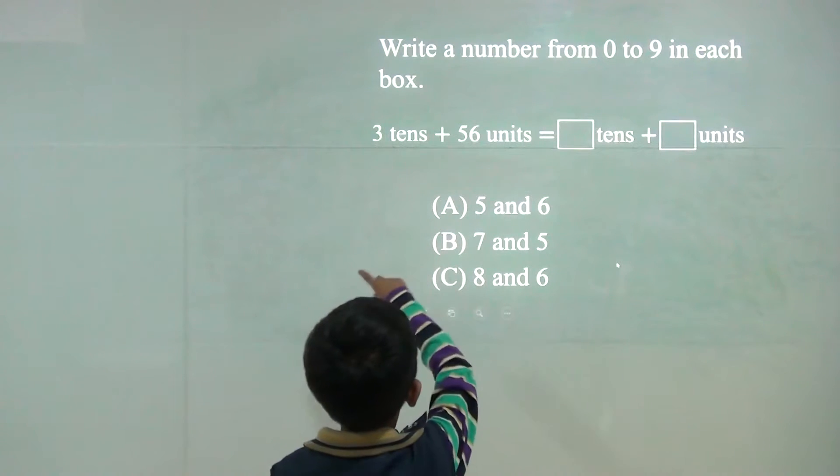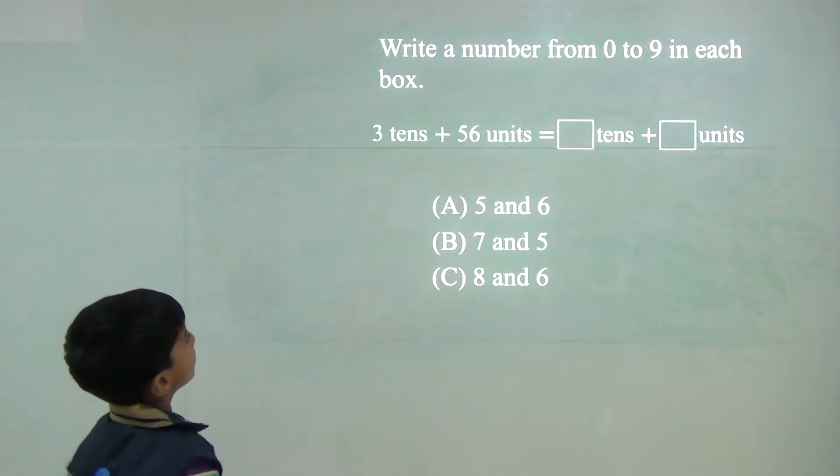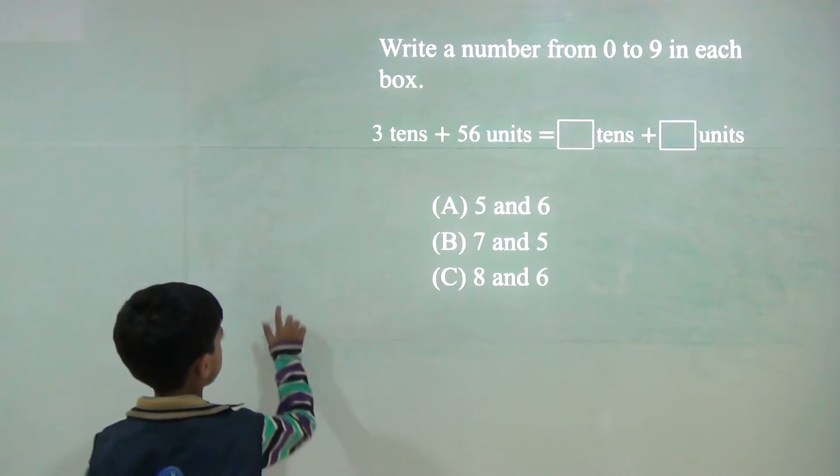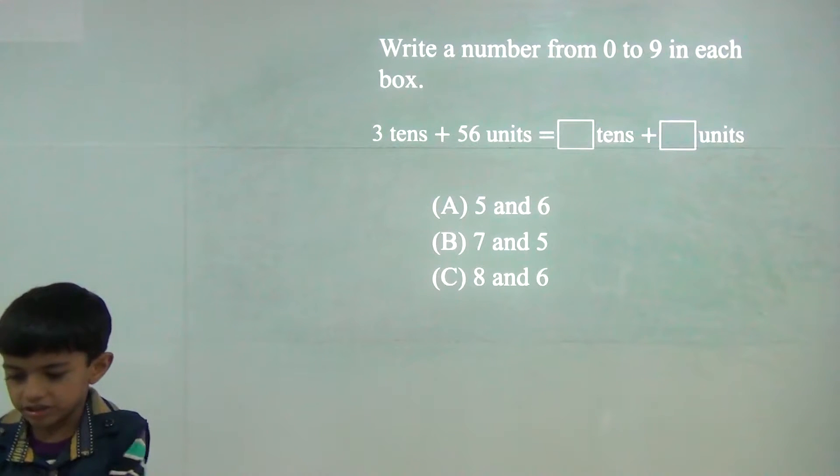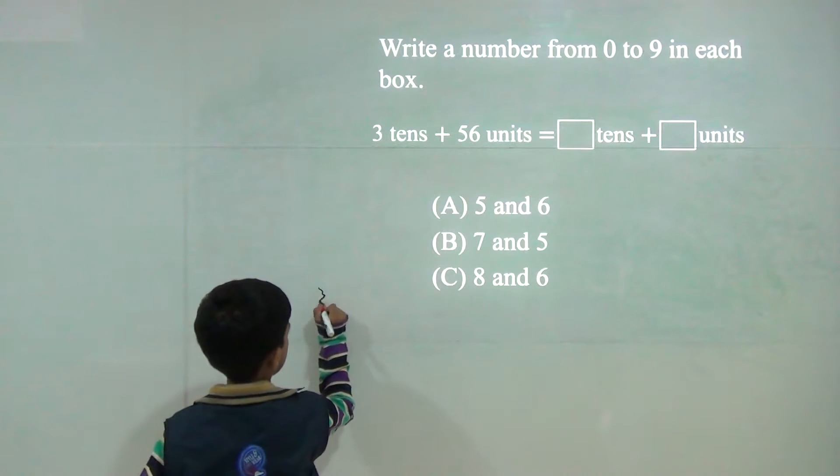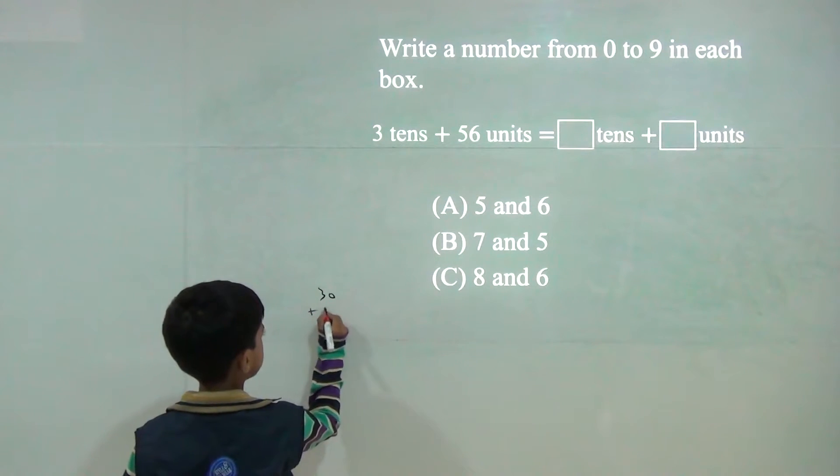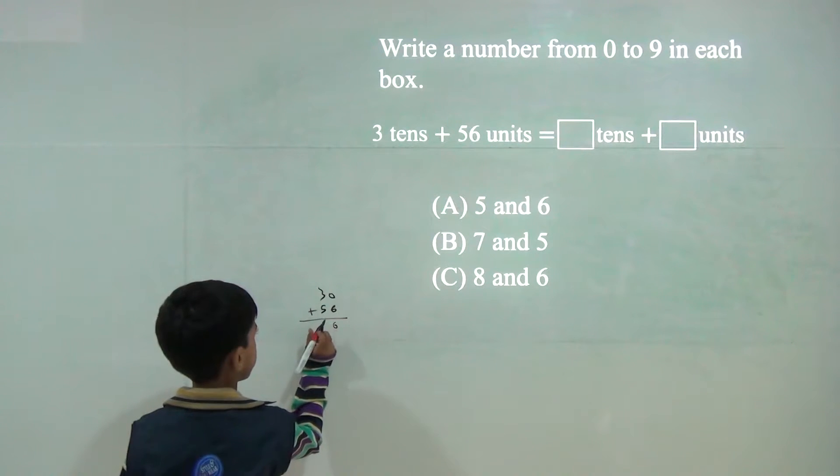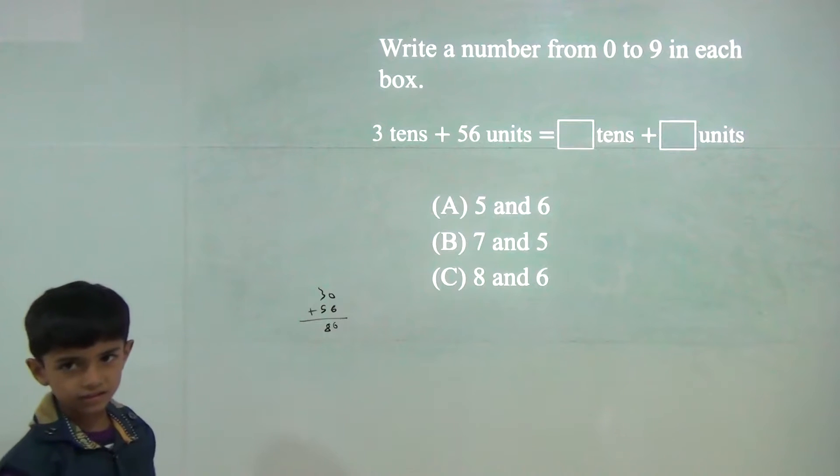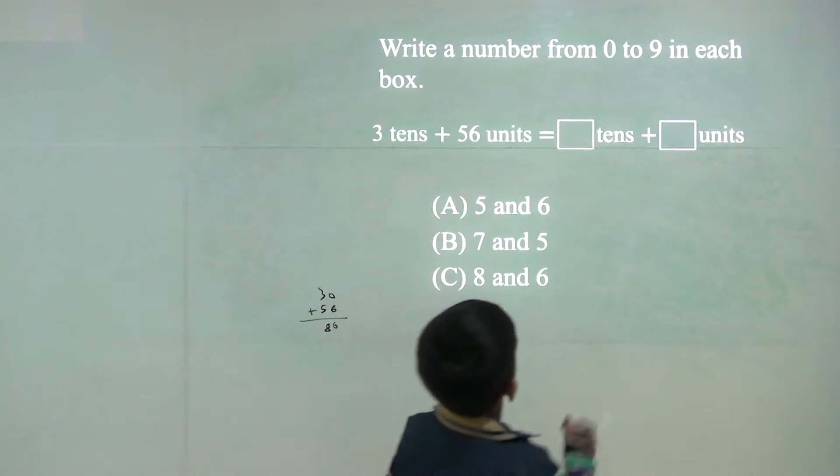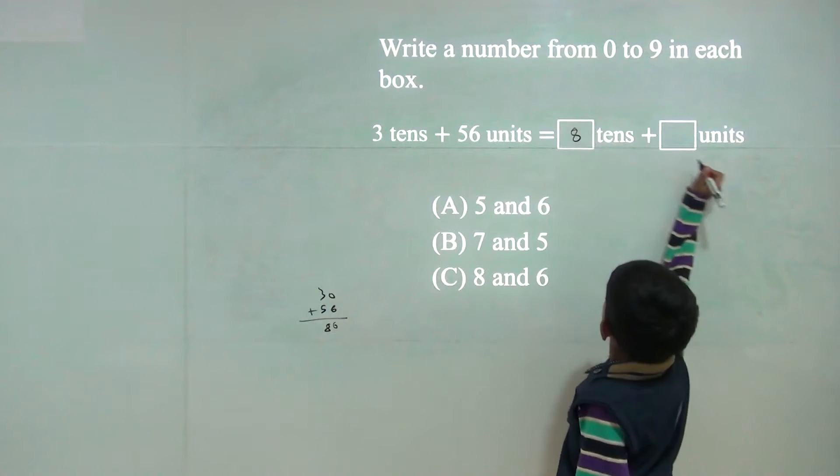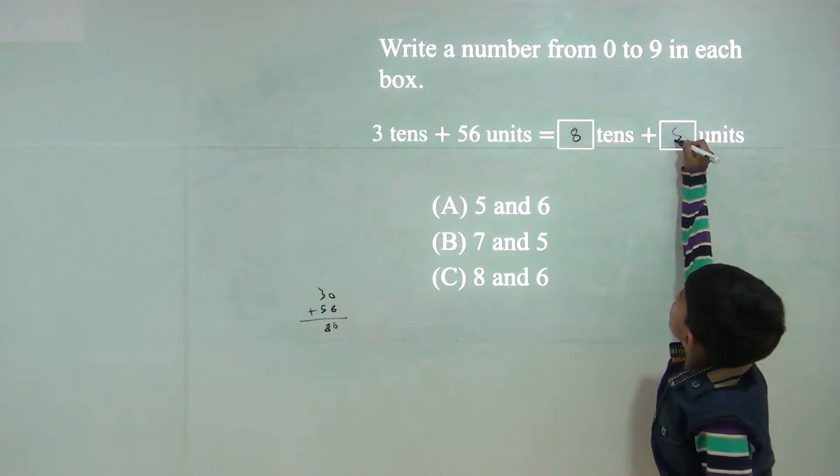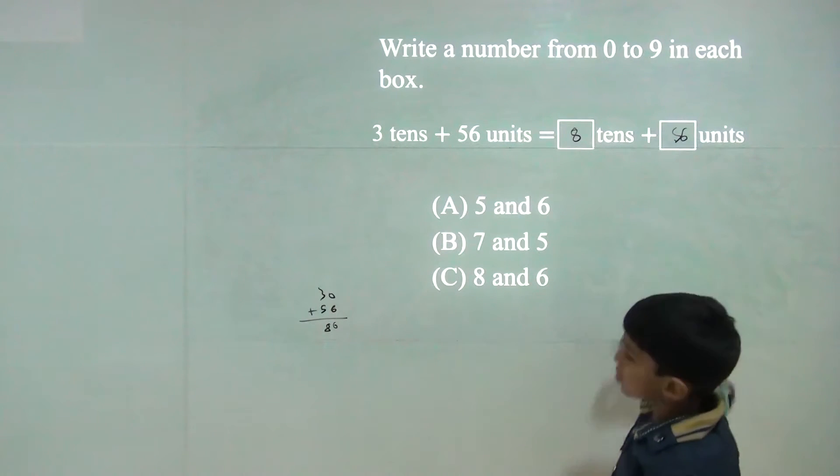Now 3 tens is 30 plus 56. 30 plus 56. Now 6 and 5 plus 3, 8. So answer would be 86. 8 tens, 8 to tens, 6 units.